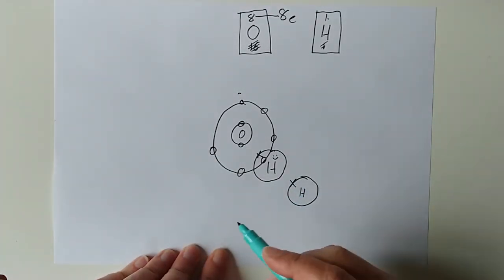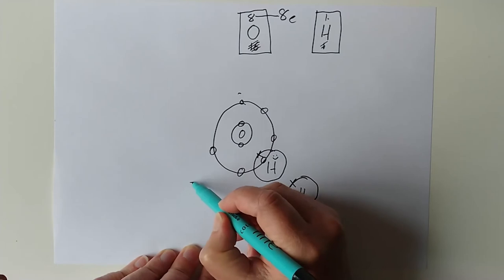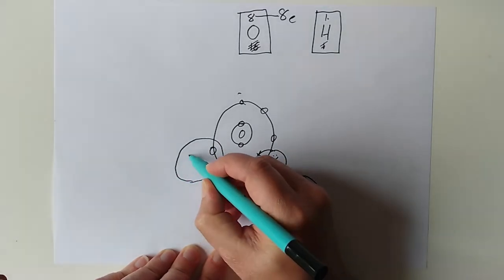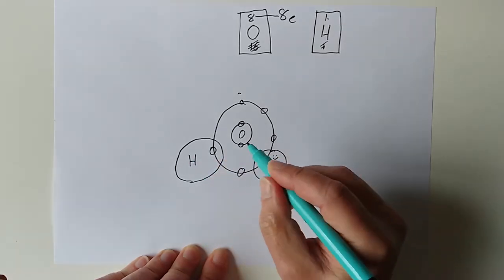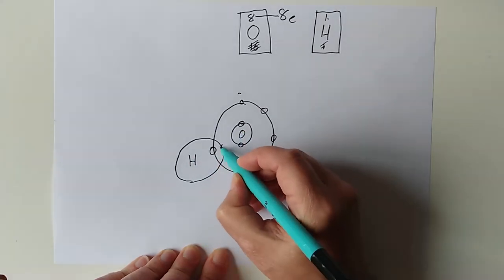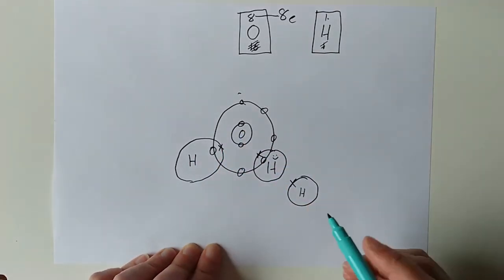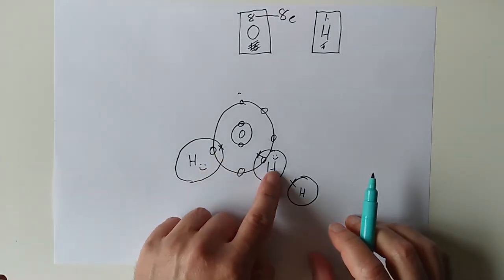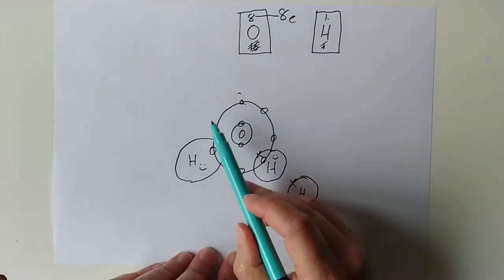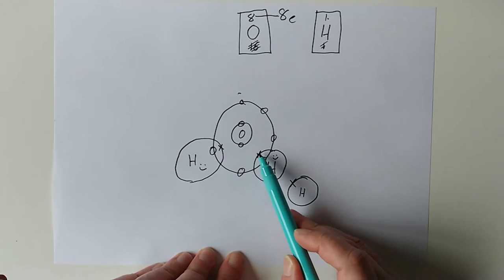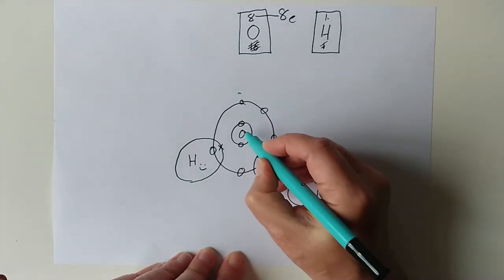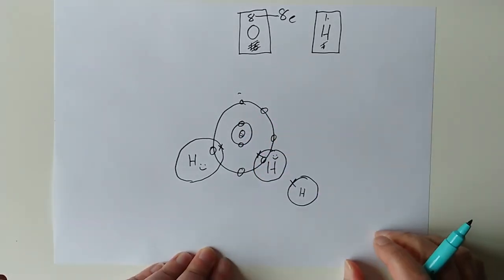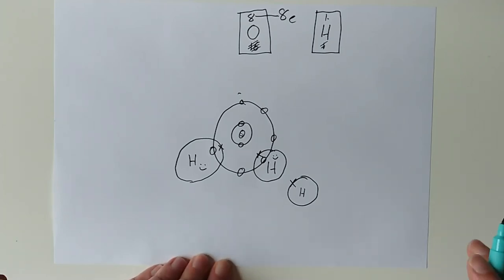It's nearly there, but still not quite stable. So what we'll do is just bring another hydrogen in and stick it on. This hydrogen is also happy because it's got two — and so is the other one. The oxygen now has 8. Brilliant — happy oxygen now as well. So that is a molecule of water.